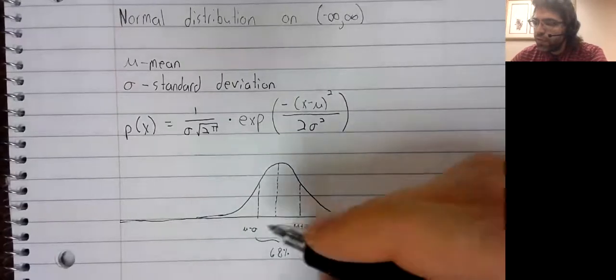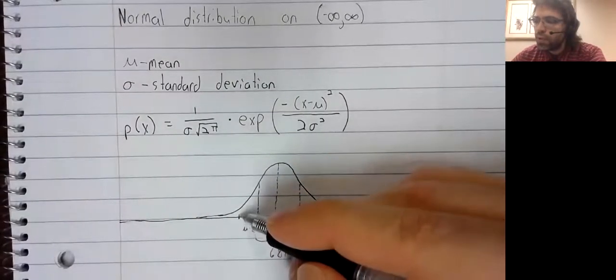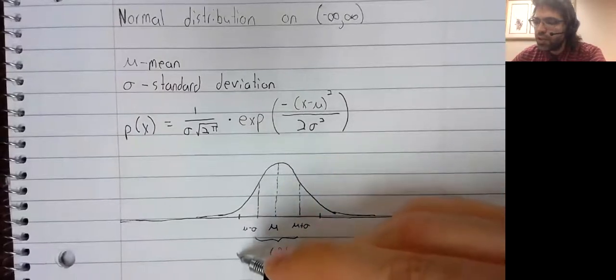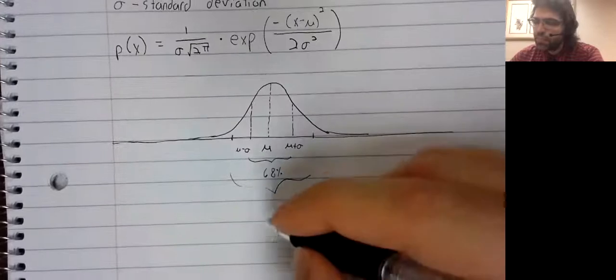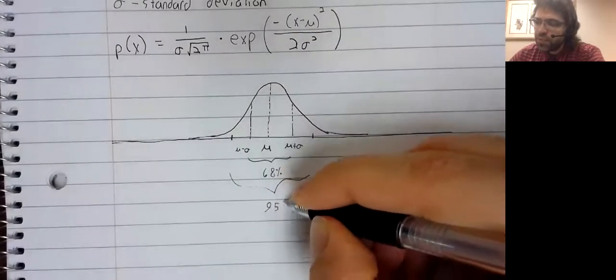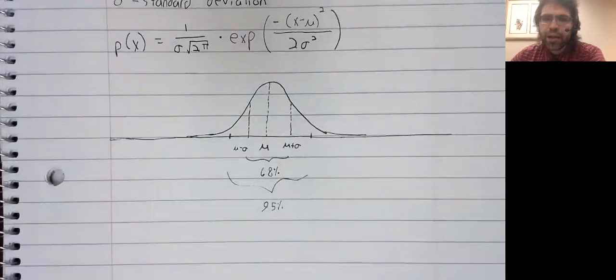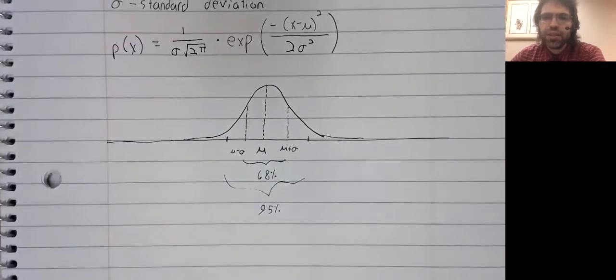If you go up to two standard deviations away, it's 95% likely.